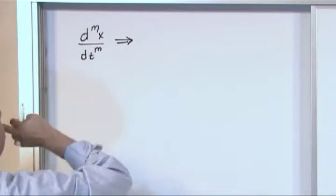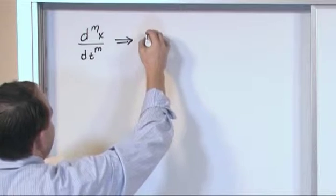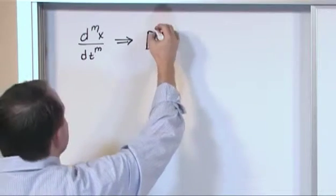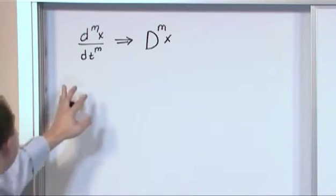Instead of writing this big fraction with the differentials everywhere, differential notation, we're going to write it in operator notation, which is a capital D with the superscript m x. Now make sure you understand what's going on here. So what we have is, this is what we call differential notation from calculus.